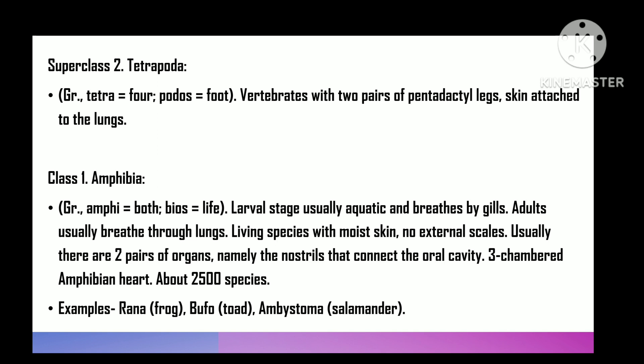Super class 2 is Tetrapoda — 'tetra' means four, 'podos' means foot — four-footed land vertebrates with two pairs of pentadactyl limbs, no fins, skin with lungs. Class 1 is Amphibia — 'amphi' means both, 'bios' means life. Larval stage usually aquatic, breathing by gills; adults typically terrestrial and respiring by lungs. Living forms with moist glandular skin, no external scales, typically two pairs of limbs, nostrils connecting to mouth cavity, heart three-chambered. Approximately 2500 species. For example, Rana (frog), Bufo (toad), and Ambystoma.